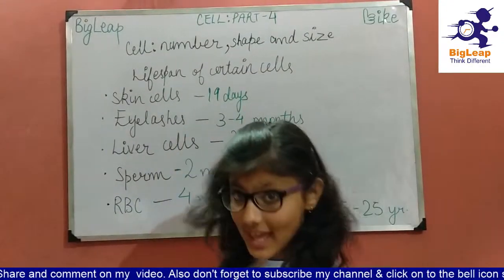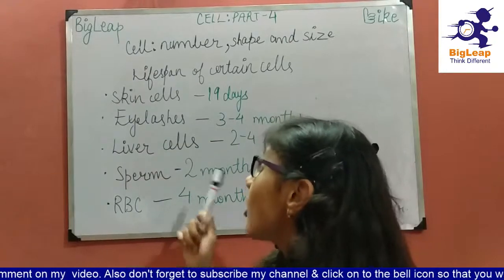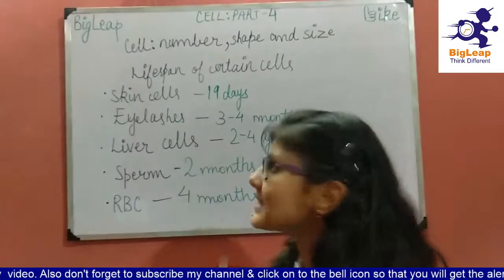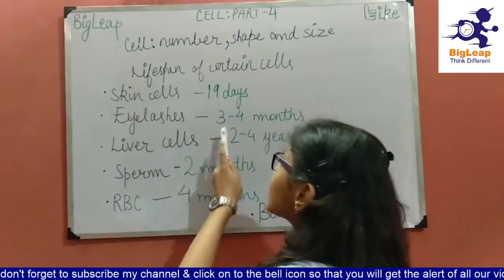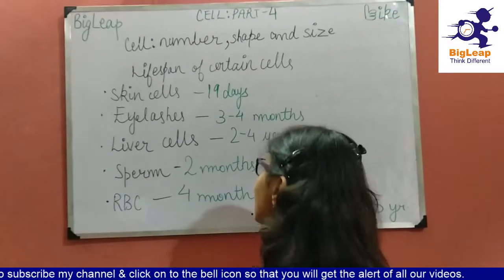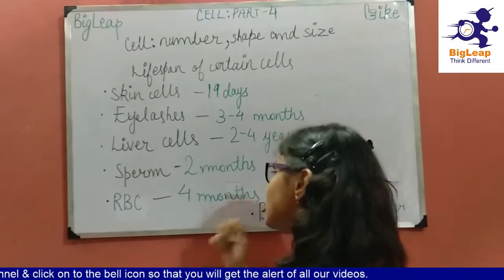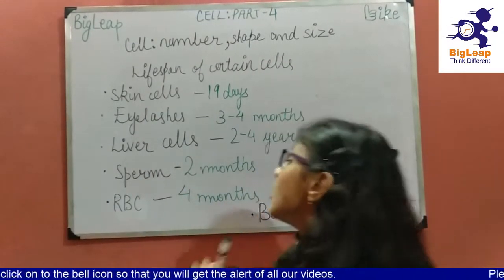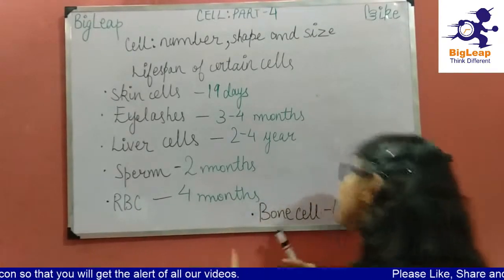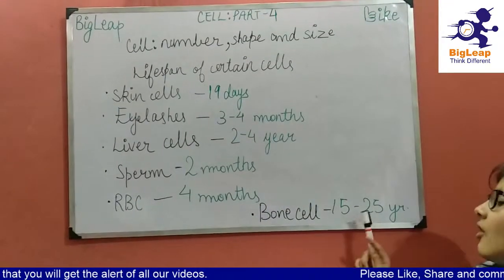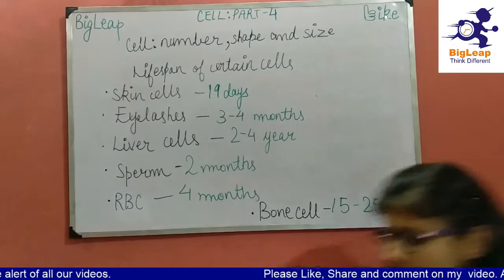A skin cell lives for an average of 19 days, eyelashes for 3 to 4 months, liver cells for 2 to 4 years, sperms for 2 months, RBCs for 4 months, and bone cells for 15 to 25 years.